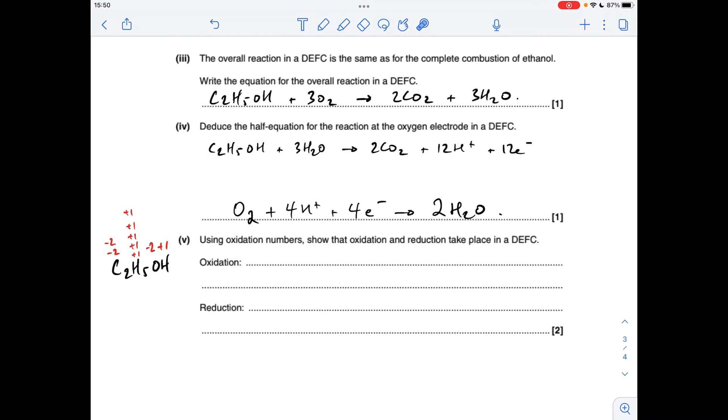So these carbons here must be minus two each. And then if we look at what's happening to carbon in its equation, you can see it's going to carbon dioxide. So they're going to be minus two, minus two. So this must be plus four. So the carbon has been oxidized from minus two up to plus four.